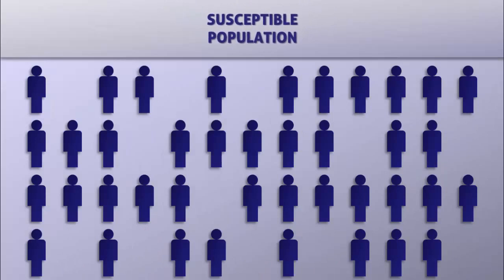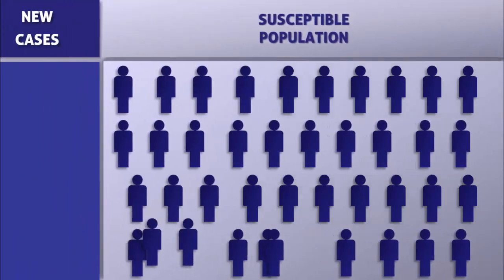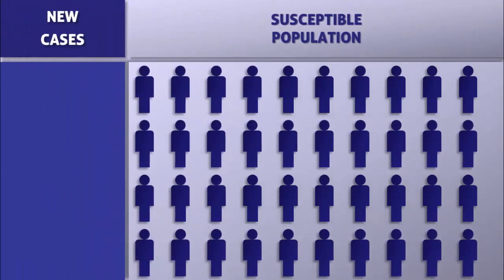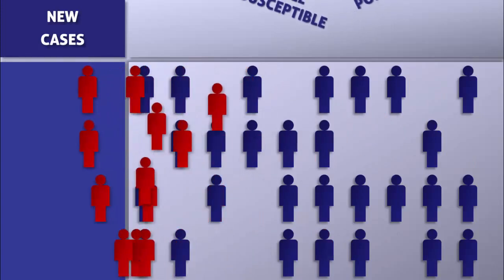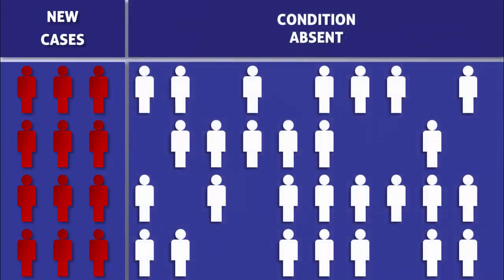The group of people that we are left with is the susceptible population. The people within this group that developed the condition are referred to as new cases, while everyone else is still susceptible and thus do not have the condition.